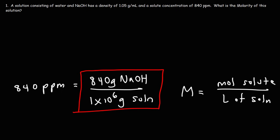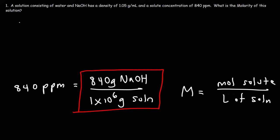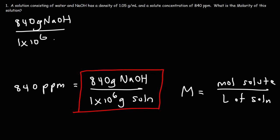Let's start with our solution concentration. Instead of writing 840 ppm, we're going to write 840 grams of sodium hydroxide per 1,000,000 grams of solution.